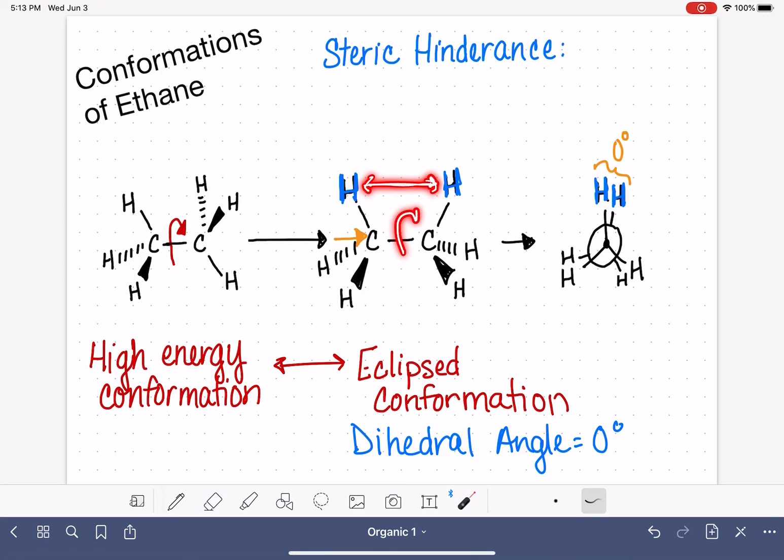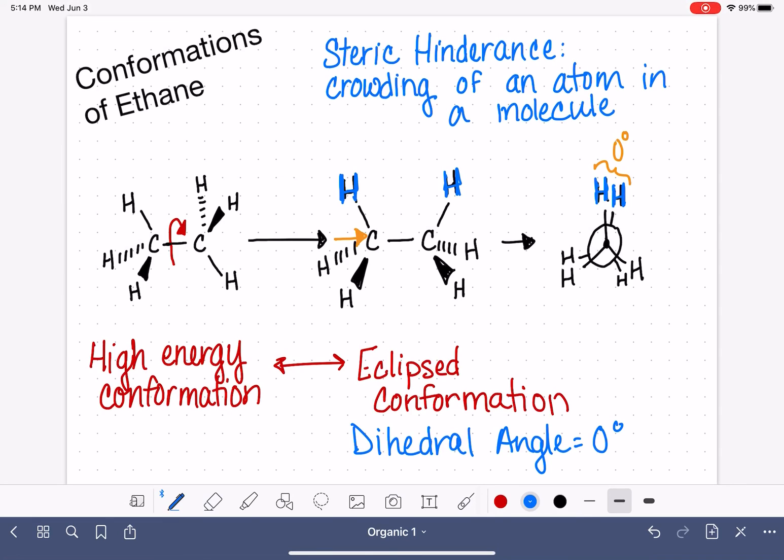If this bond were to just twist a little bit, these hydrogen atoms could get further apart and they would have less negative interaction. So steric hindrance is crowding or atoms coming closer than they need to in a molecule. We'll talk about steric hindrance a lot because it ends up being a really big deal.